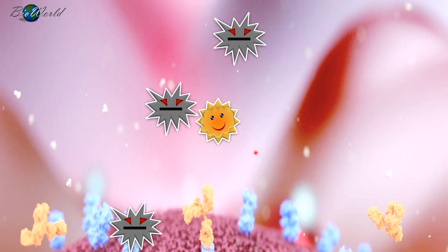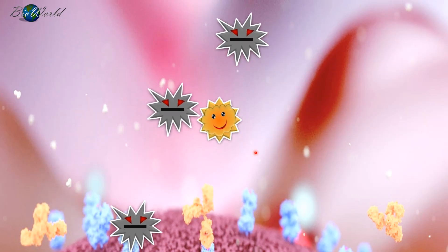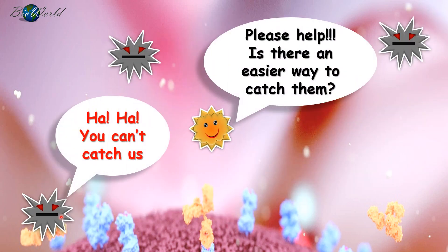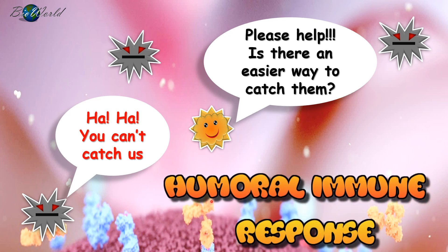This cat and mouse game that you see occurs during an infection. Your immune cell, the macrophage, has to chase after the pathogen causing infection. Now during an infection, at times, the number of pathogens far outnumber the macrophage. So the macrophage needs assistance. Today in BioWorld, I'm going to explain to you the humoral immune response which helps the macrophage get its job done.